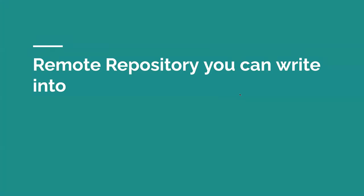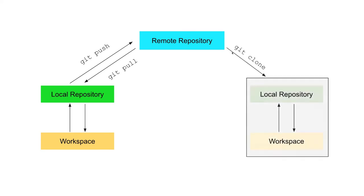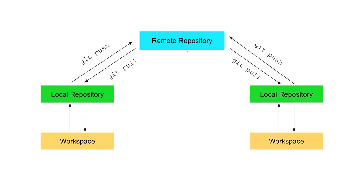It's good to start with a schematic of what we're trying to see. Last week we saw how to work with the local repository, which is the same as your work base — you commit and can go back in time. Today we'll see a remote repository, with git push from local to remote, git pull from remote to local, and git clone to copy a repository elsewhere and keep them all synced together.